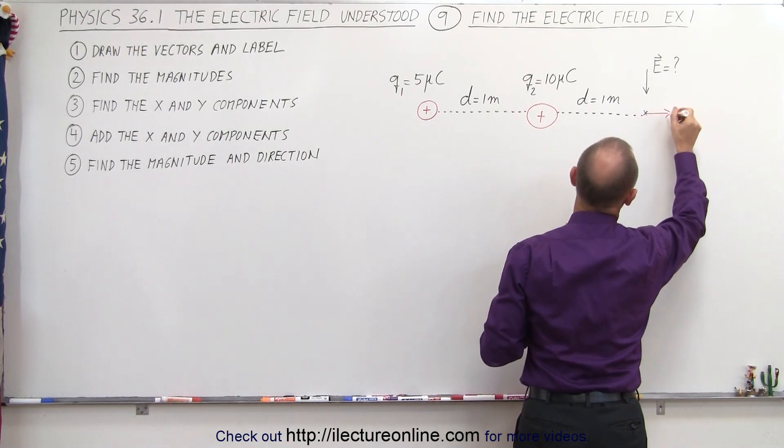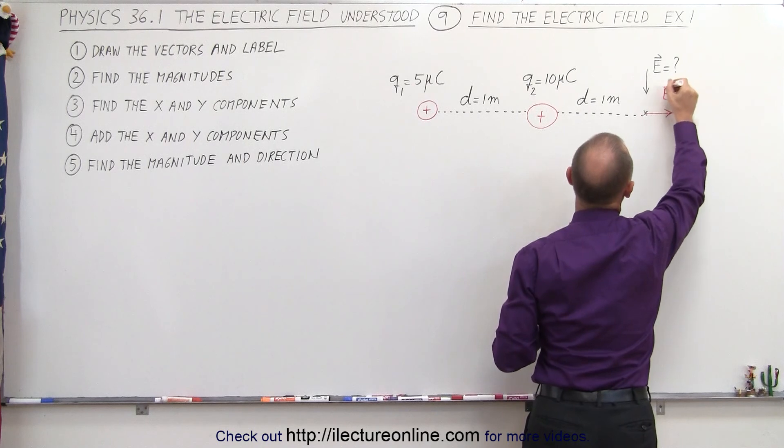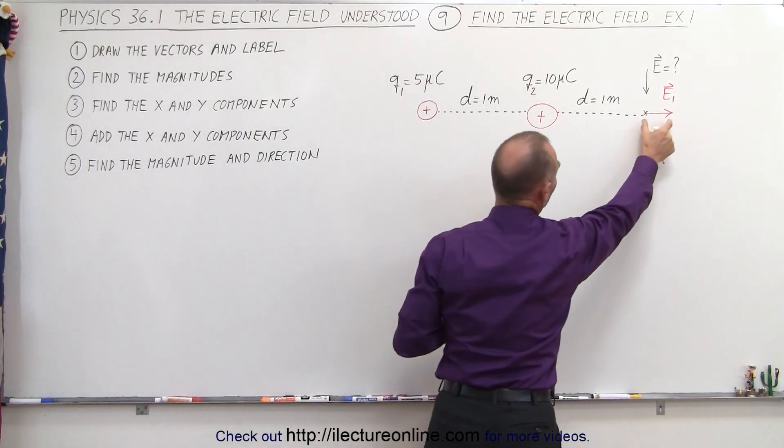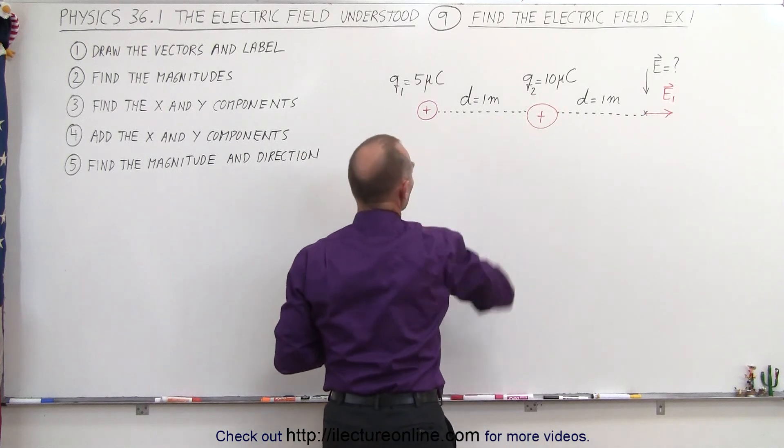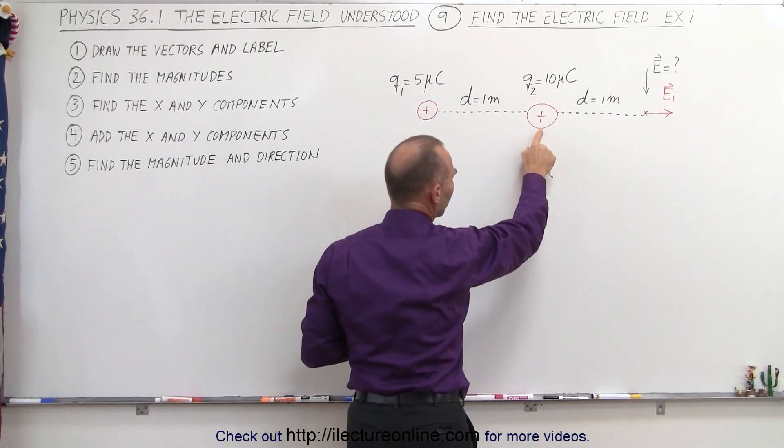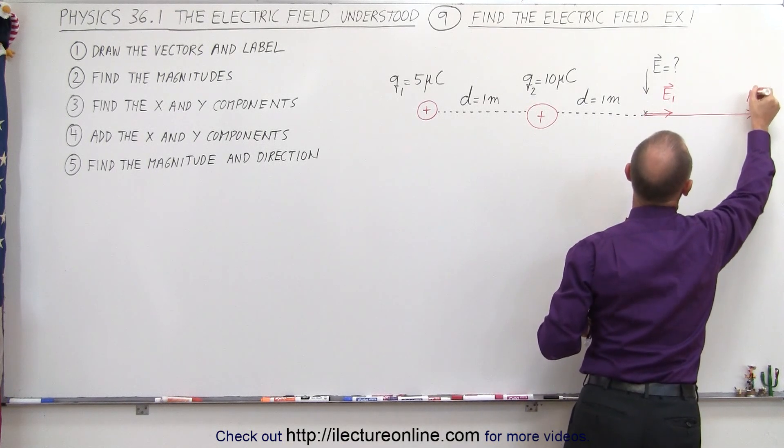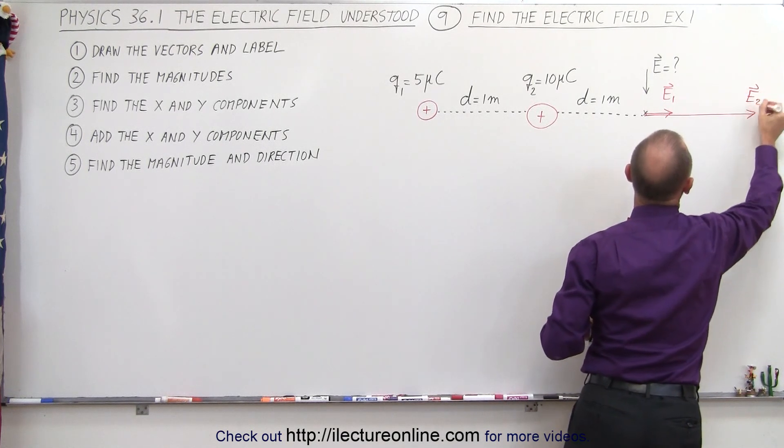So here, this would be the electric field from charge one, and let's call it E sub one to indicate that this is the electric field vector of this charge right here. Now this is much closer, much bigger, so we'll have a much larger electric field caused by that charge.